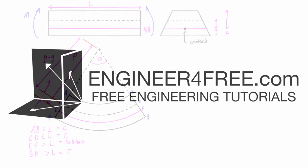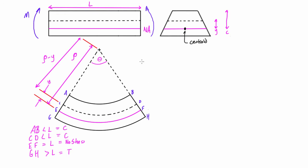Welcome back. In this video we're starting to talk about stress and strain in the elastic range due to pure bending. This is what we were left with from the last video, where we looked at a prismatic member subjected to pure bending. We defined the geometry and figured out that for a positive internal moment, material above the neutral axis gets shorter and material below gets longer, introducing longitudinal normal stresses and strains.